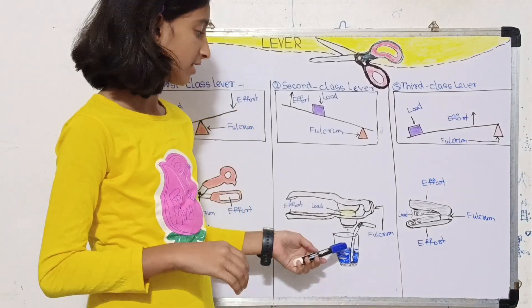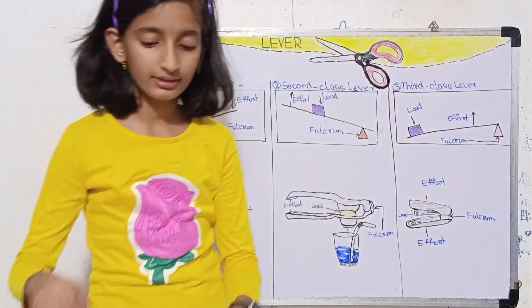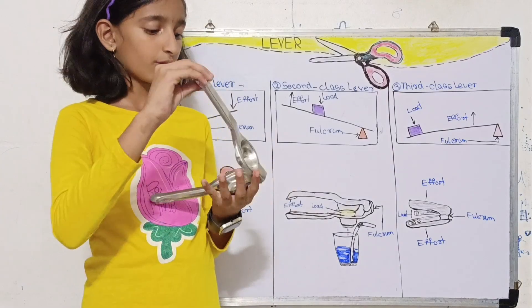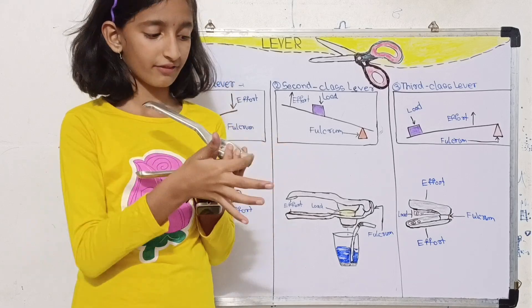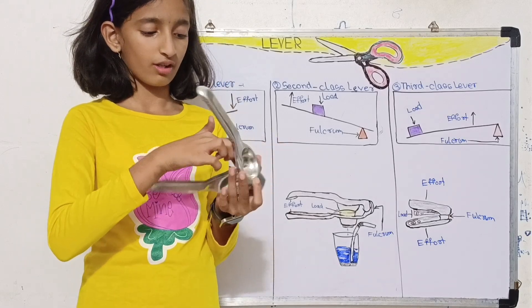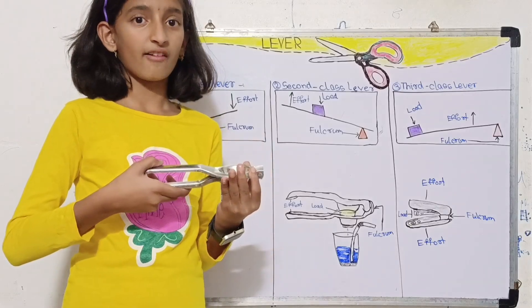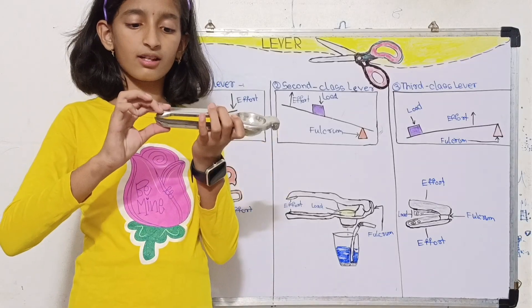Let's see with an example which is the lemon squeezer. This is a lemon squeezer which we use to squeeze the lemon. This is the fulcrum where the upper and lower parts are fixed, and here is the load - we put the lemon inside and squeeze it.